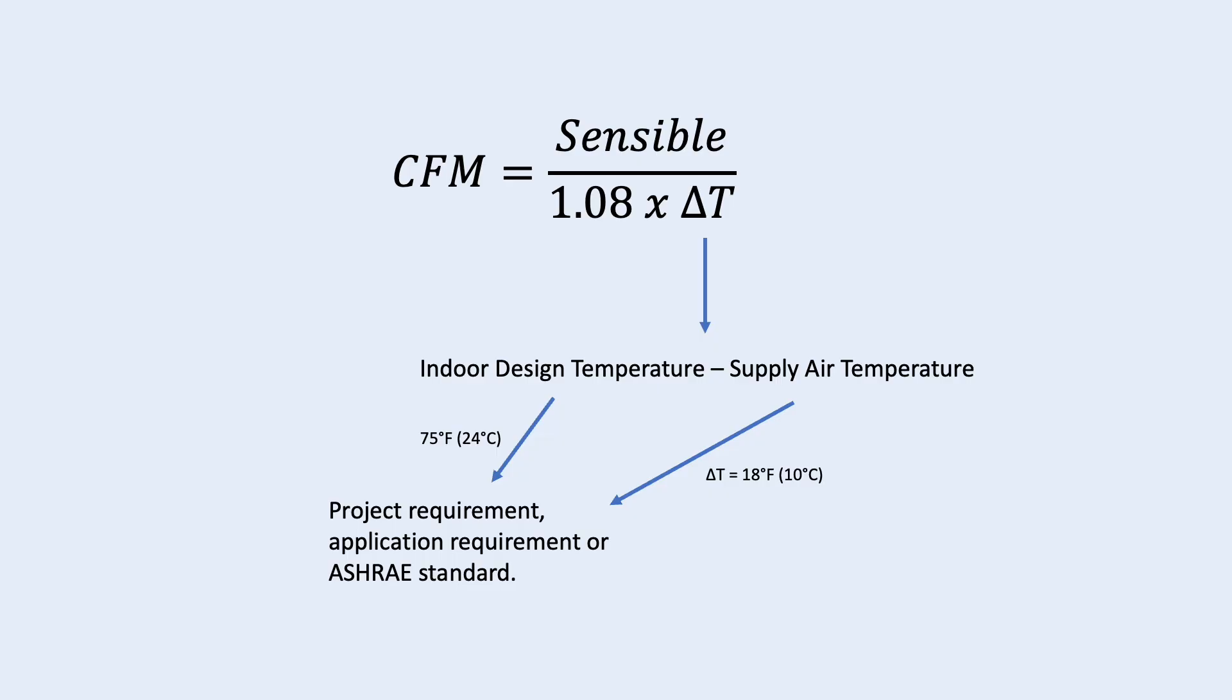Some standards or guidelines may specifically mention the lowest possible supply air temperature. So, if the indoor design temperature is 75 degree Fahrenheit, the supply air temperature is 57 degree Fahrenheit.